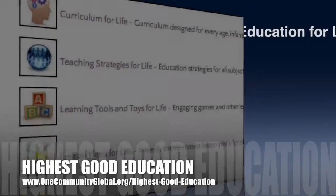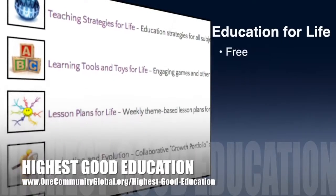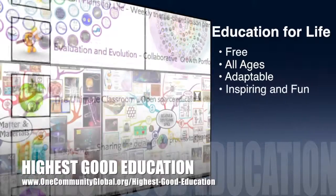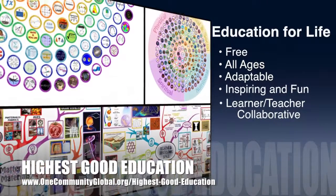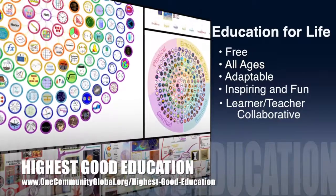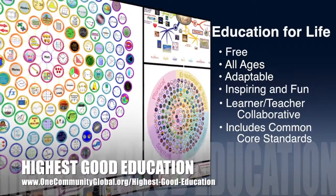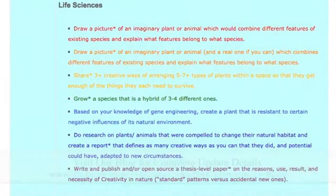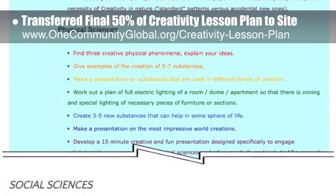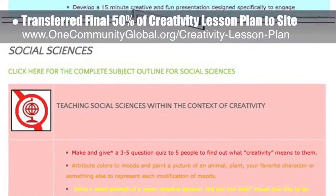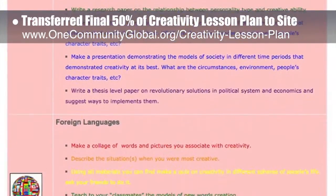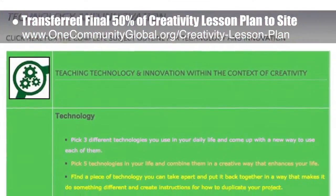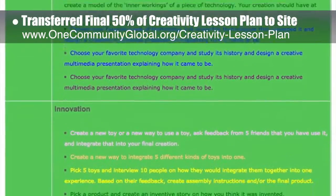One Community's approach to highest good education is open source and free shared, designed for all age groups, adaptable to any schooling environment, inspiring and fun for all participants, a learner-teacher collaborative, and it includes US common core standards. This week, the core team transferred the final 50% of the written content for the Creativity Lesson Plan to the website. The written part of this lesson plan — designed to teach all subjects to all learning levels in any learning environment using the central theme of creativity — is now 100% complete on the site.